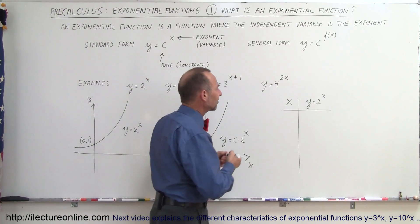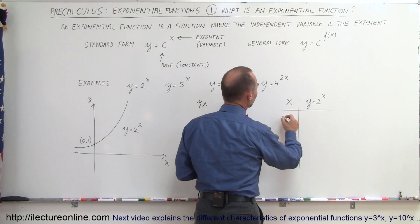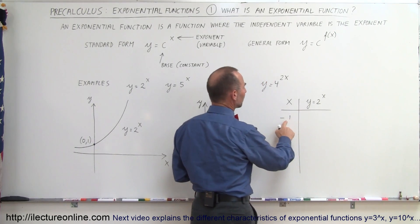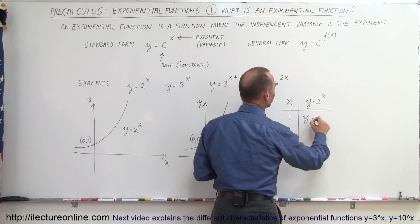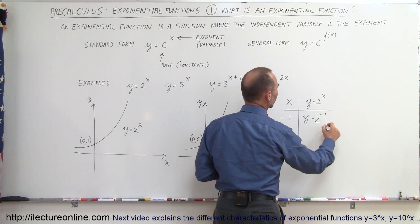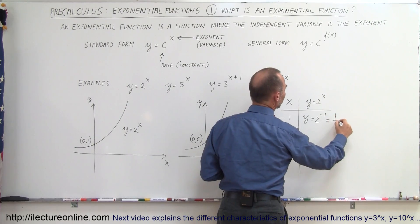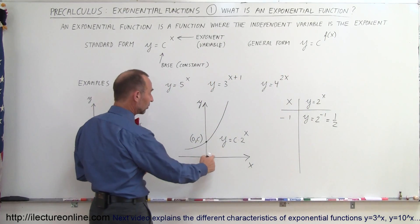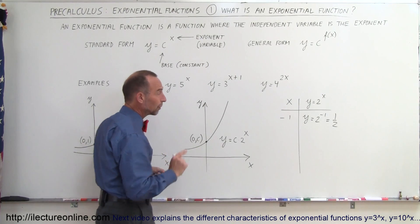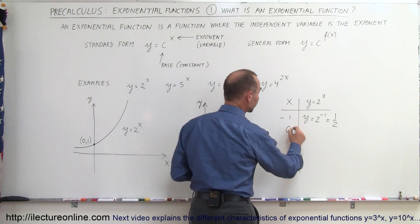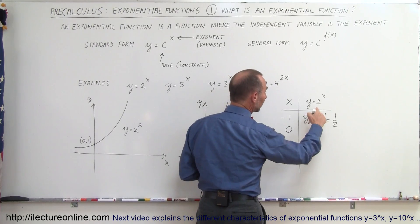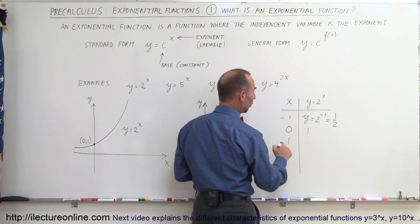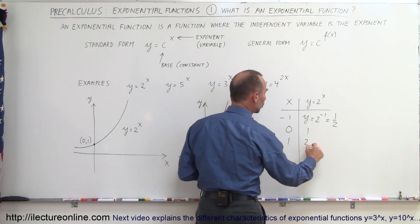Let's try that here. Let's say x equals minus 1. When x equals minus 1, y equals 2 raised to the minus 1 power, which equals 1 over 2, or one half. So when x equals negative 1, y equals one half. When x equals 0, y equals 2 to the 0 power, or 1. When x equals 1, y equals 2 to the 1 power, or 2.